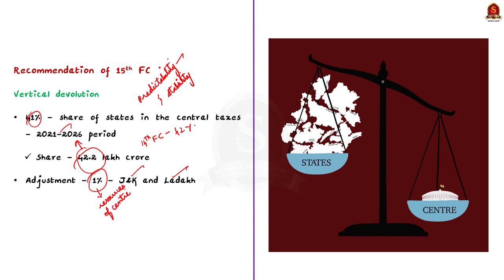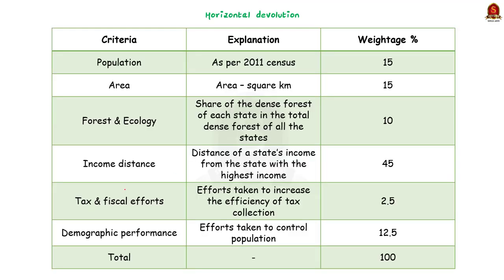Now coming to horizontal devolution — distribution between the states — it is based on certain criteria. Three criteria are included in the 15th Finance Commission that were not in the 14th Finance Commission: first, forest and ecology (note: 14th Finance Commission used 'forest cover' only); second, tax and fiscal efforts; and third, demographic performance. All six criteria form the basis of tax devolution among states.